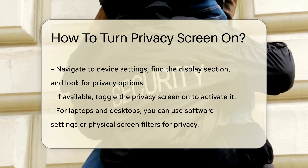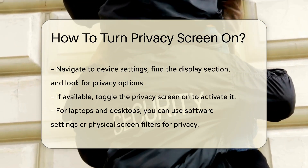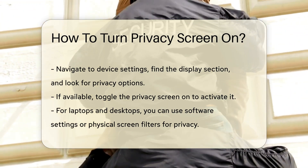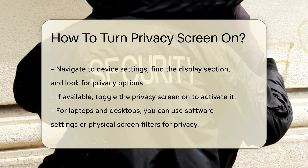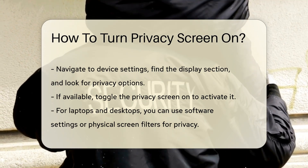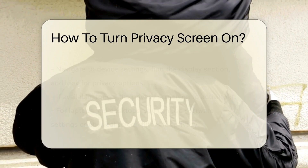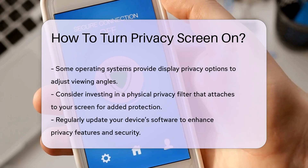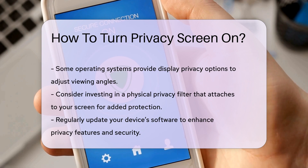This feature may allow you to adjust the screen's viewing angle, limiting visibility from the sides. For iOS devices, the privacy settings may differ. While iPhones do not have a dedicated privacy screen feature, users can utilize screen protectors that limit viewing angles. These physical protectors can be purchased from various retailers. If you are using a computer, privacy screen options may also be available.